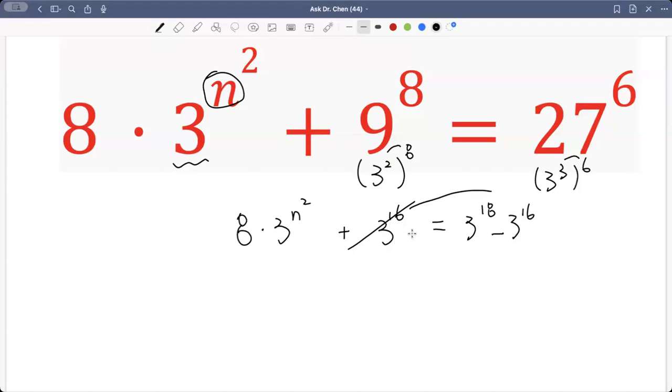It's the same as we subtract 3 raised by 16 on both sides. So this side, left hand side, we have 8 multiplied by 3 raised by n squared.